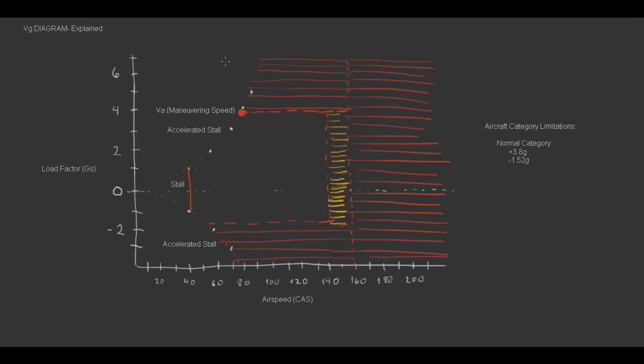The thing to keep in mind about the VG diagram is that it's only valid for an airplane at a certain weight and at a certain altitude. If either the weight or the altitude changes, the VG diagram will change.